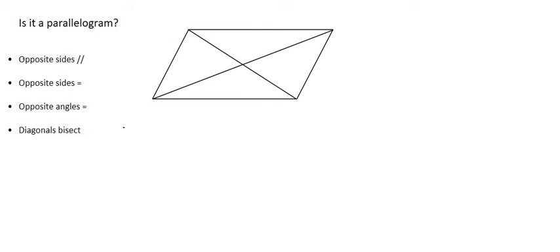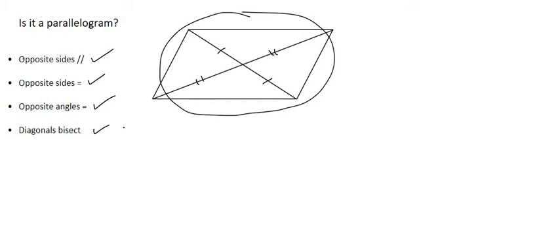In a later video we said: what if the diagonals bisect each other and we don't know anything else — does that mean it's a parallelogram? Well, yes. We started off with diagonals bisecting and what we were able to work out was that the opposite angles were equal, the opposite sides were equal, and the opposite sides were parallel. So if you have a shape where the diagonals bisect, we can also say that it's a parallelogram.